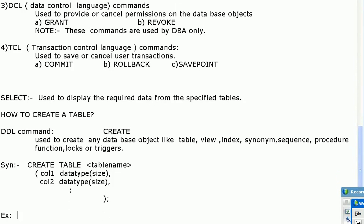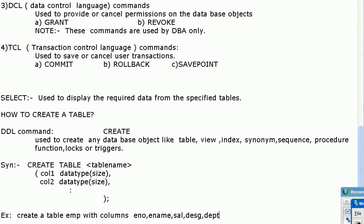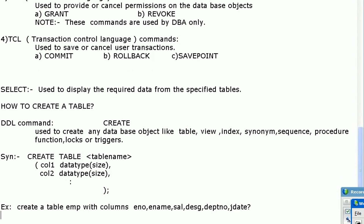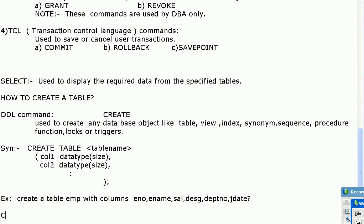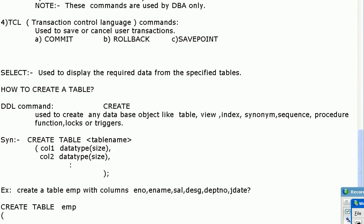Let me write an example. We create a table named EMP with six columns: eno, ename, salary, designation, department number, and jdate. The query starts: CREATE TABLE EMP. The first column is eno with data type NUMBER(3).